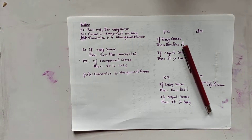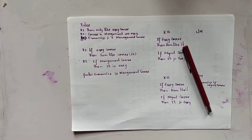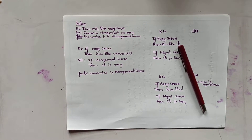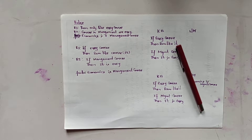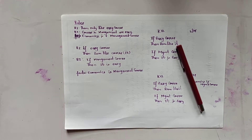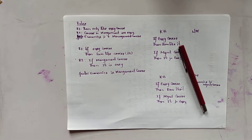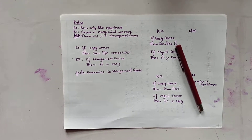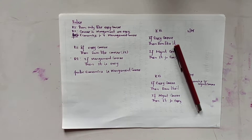Namaste. Today in this video we are going to discuss about the inference mechanism used by expert systems. The inference mechanism can be basically classified into two types: forward chaining and backward chaining.